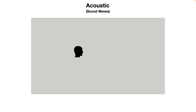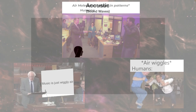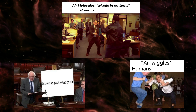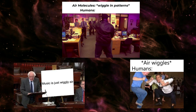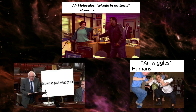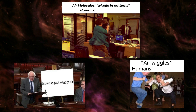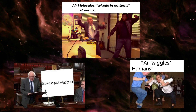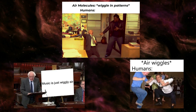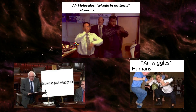Sound begins at the source. For this demonstration, we'll be using a vocalist as our source example. As the vocalist sings or speaks, their voice is projected through the room as waves. These waves change the air pressure within the room, which we experience as sound. How this sound travels through the room and how we experience it depends greatly on the room itself.